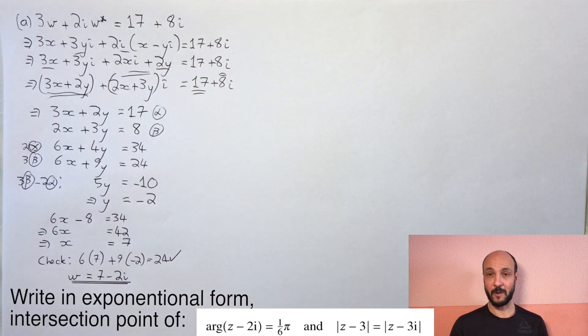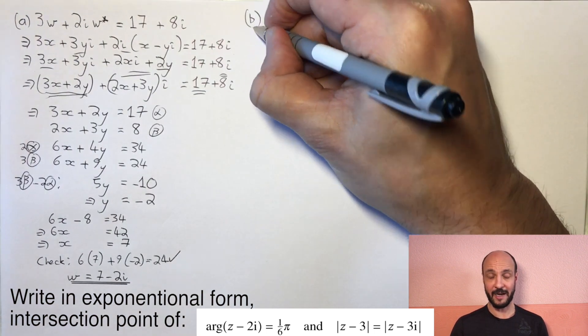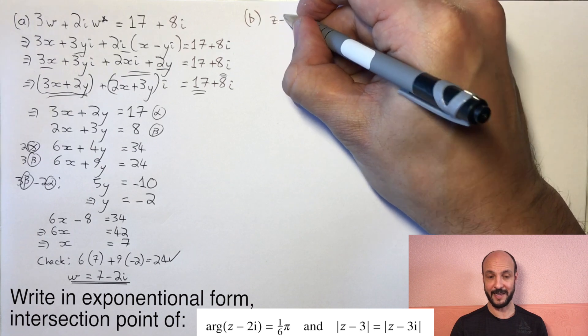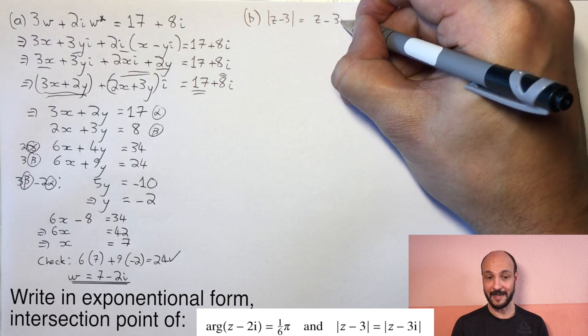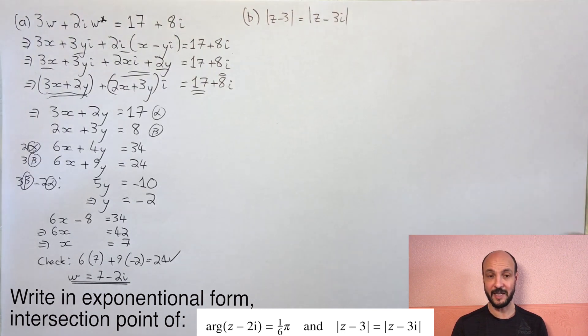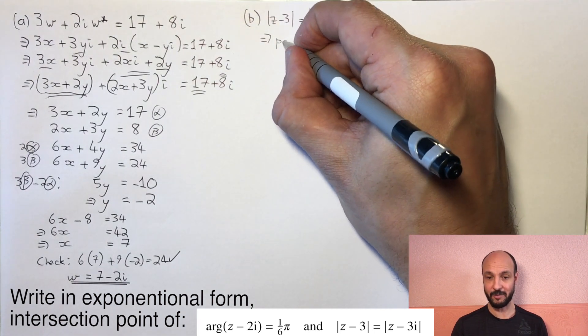Okay, so our second question, we're looking at the intersection point of two bits of information that we're given. The bit of information on the right is more straightforward, so we'll start with that. It says the distance between our points and 3, an absolute value of z minus 3, is equal to the distance between our points and 3i, the absolute value of z minus 3i.